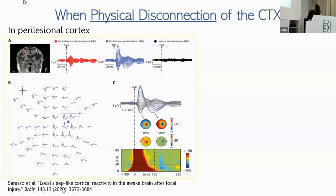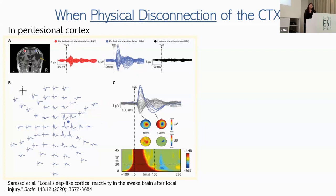However, in the contralateral area of the same awake patient, there is a more typical awake brain response. Even when the patient is awake, the perilesional region shows slow waves while the other side shows the awake response. This tells you that the cortical circuitry tends to generate these slow waves.